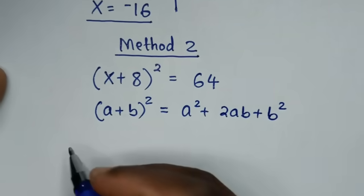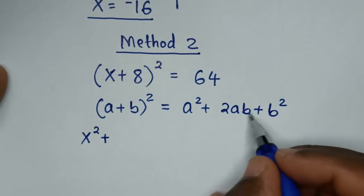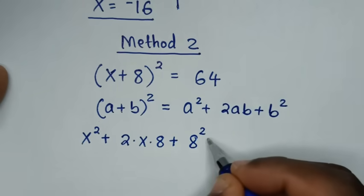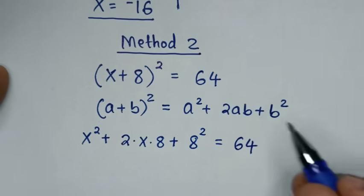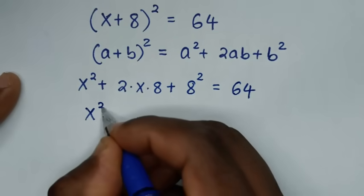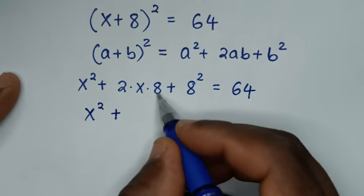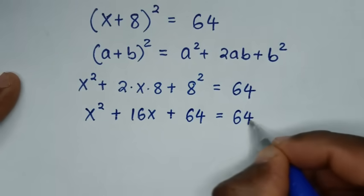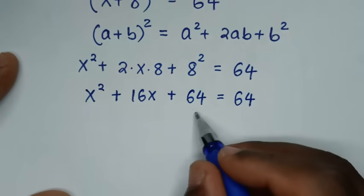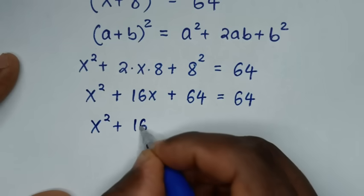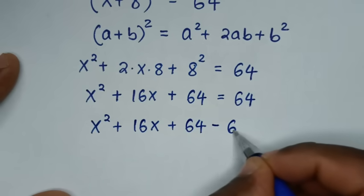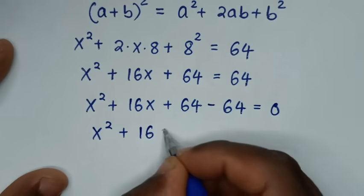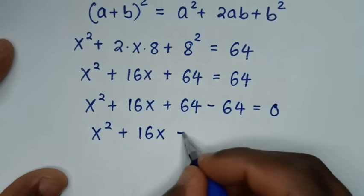So here a² gives x², plus 2ab gives 2 × x × 8, plus b² gives 8², equals 64. Then x² + 16x + 64 = 64. We take 64 to the left side, so x² + 16x + 64 − 64 = 0, which gives x² + 16x = 0.